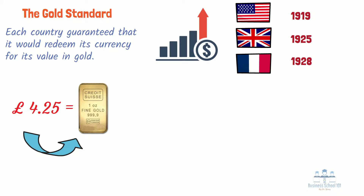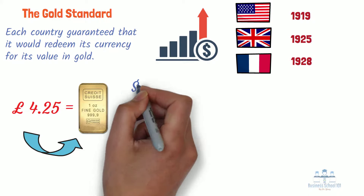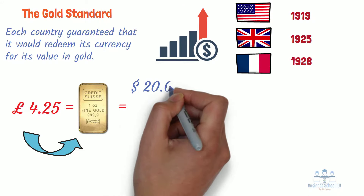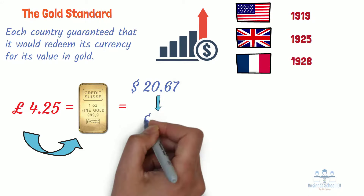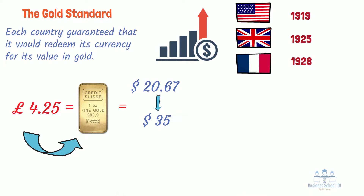The United States followed suit and left the gold standard in 1933, but returned to it in 1934, raising the dollar price of gold from $20.67 per ounce to $35 per ounce. Since more dollars were needed to buy an ounce of gold than before, the implication was that the dollar was worth less. This effectively amounted to a devaluation of the dollar relative to other currencies.